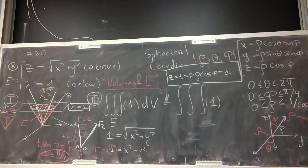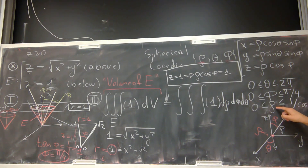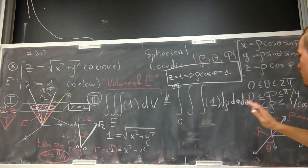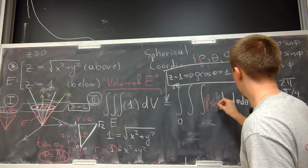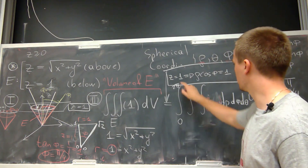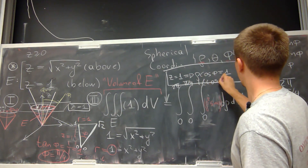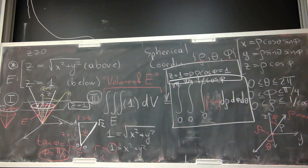Now I can set up the full integral. The order is dρ dφ dθ, because the upper bound of ρ is in terms of φ, and φ has constant bounds. Also — never forget the Jacobian! In spherical coordinates the Jacobian is ρ² sin φ. So the integral is from 0 to 2π, from 0 to π/4, from 0 to 1/cos φ, of ρ² sin φ dρ dφ dθ.